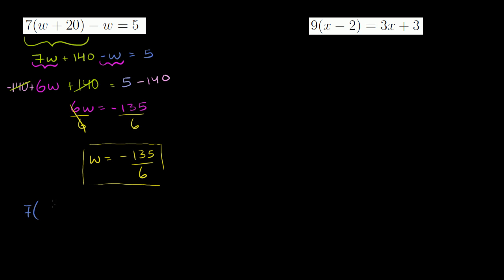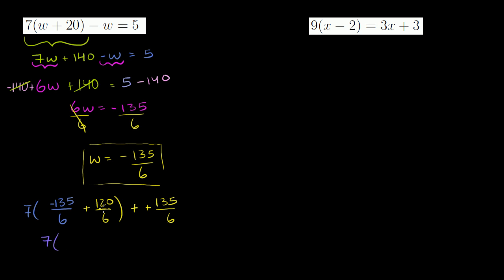So 7 times (-135/6) — that's our solution for w — plus 20. I'm going to write 20 as 120/6. Minus w, and w is -135/6. Subtracting a negative becomes adding a positive. So this becomes 7 times (-135 + 120)/6, which is 7 times (-15/6), plus 135/6.